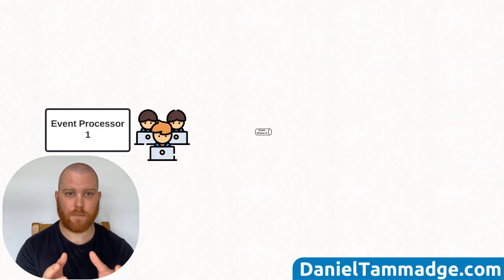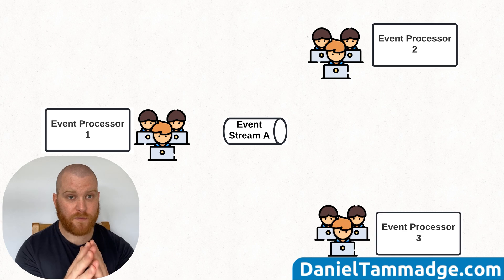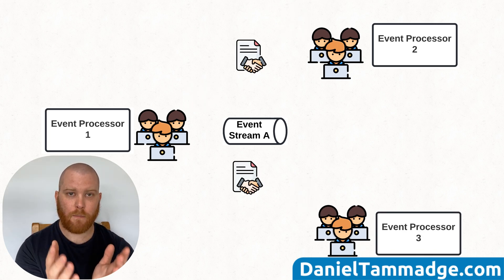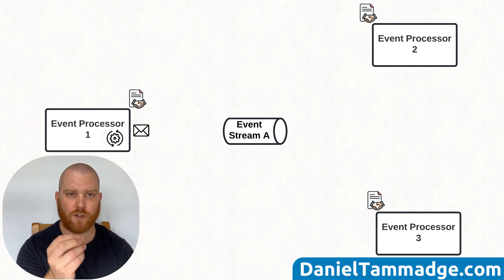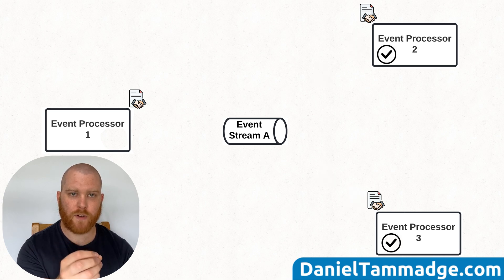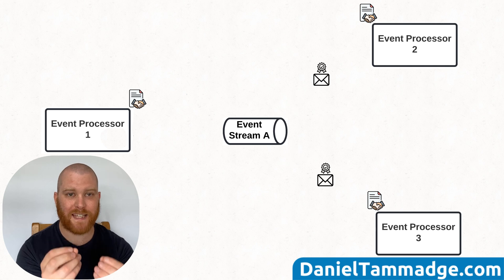Without an explicit schema registry, a publisher can publish any message which may or may not conform with a verbally agreed event schema between a publisher and a subscriber, which might be developed and owned by different development teams. If a publisher publishes an event that does not conform with an agreed schema, downstream subscribers will not be able to read and process the event correctly. This could have massive negative consequences.